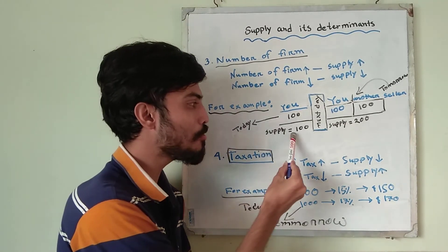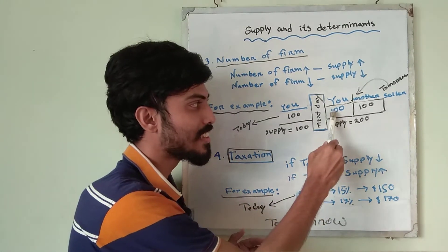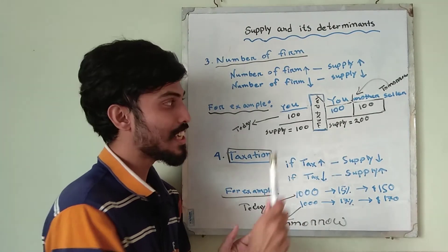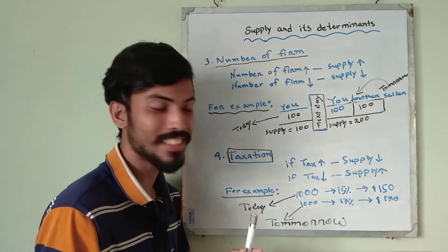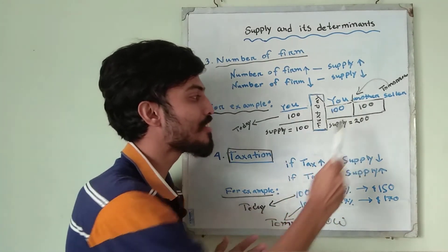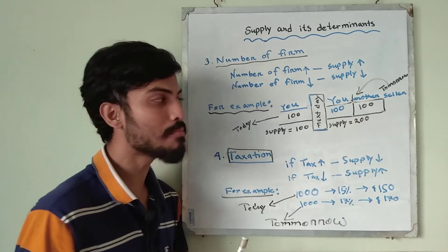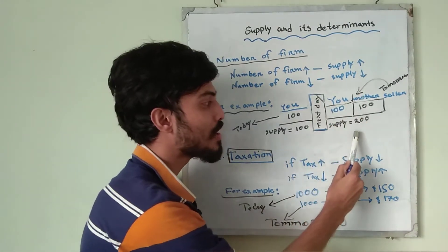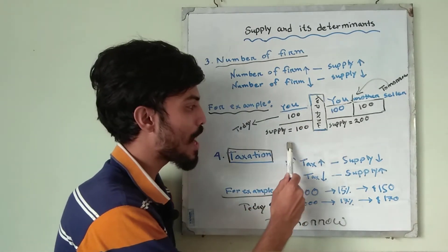Your supply is 100 units. The next day you are still selling 100 units, but another seller enters the market also selling 100 units. So 100 plus 100 equals 200 — supply will be 200. Whenever the number of firms increases, supply increases; whenever it decreases, supply decreases.